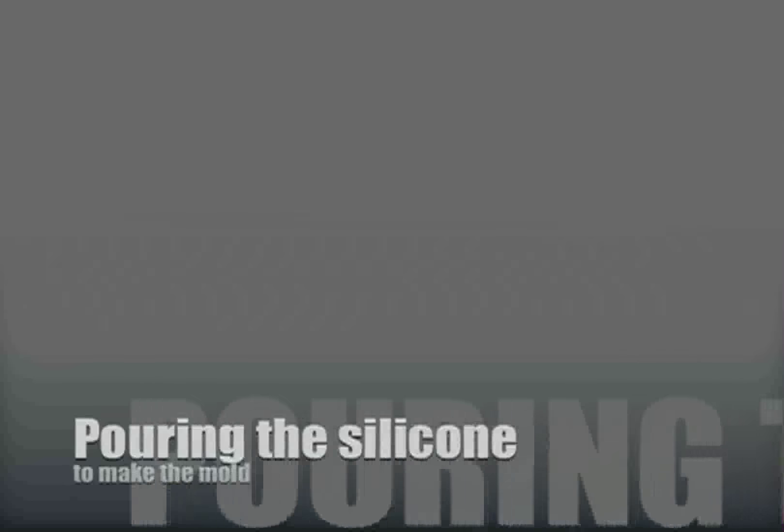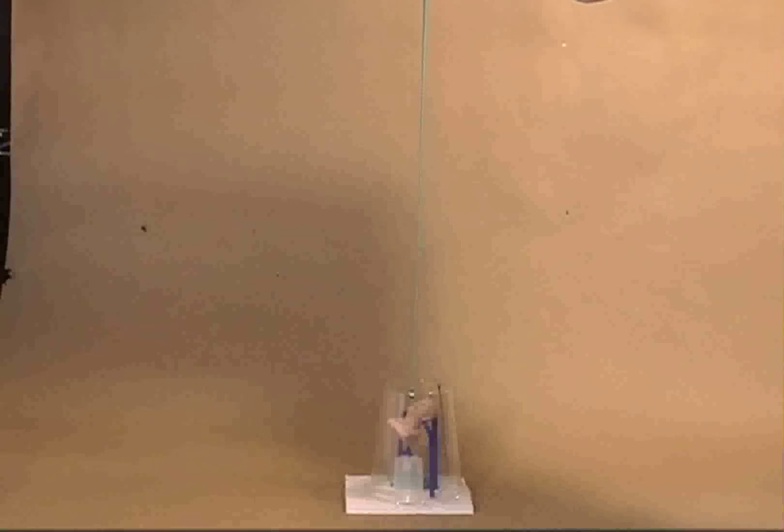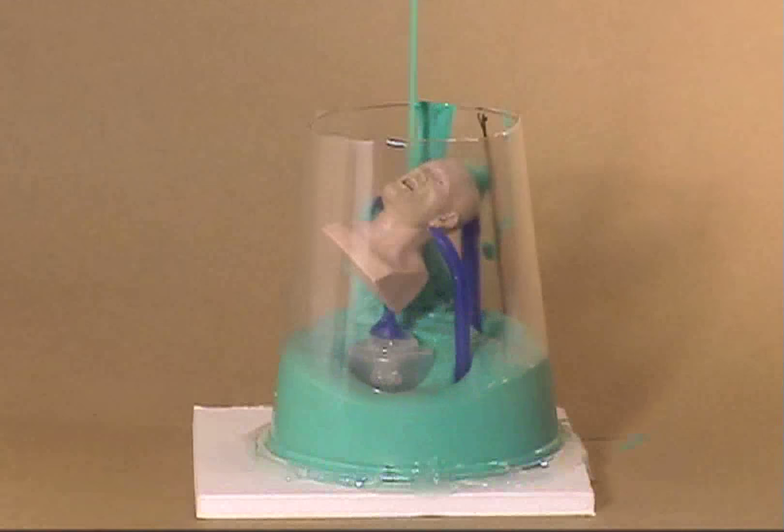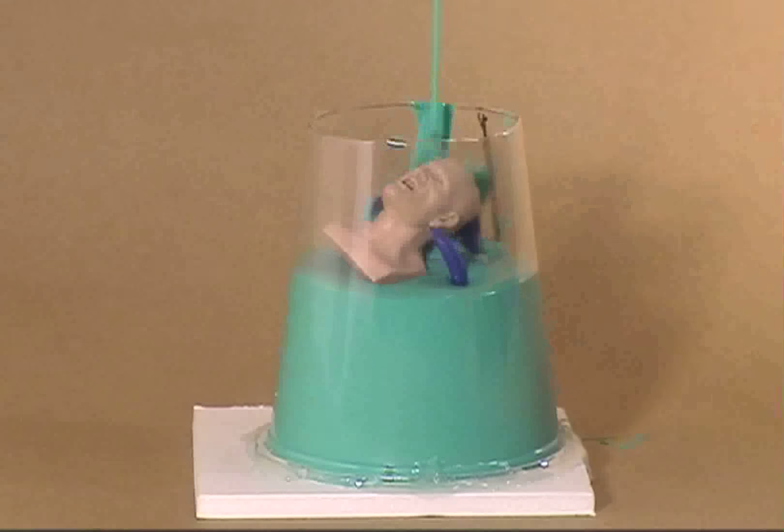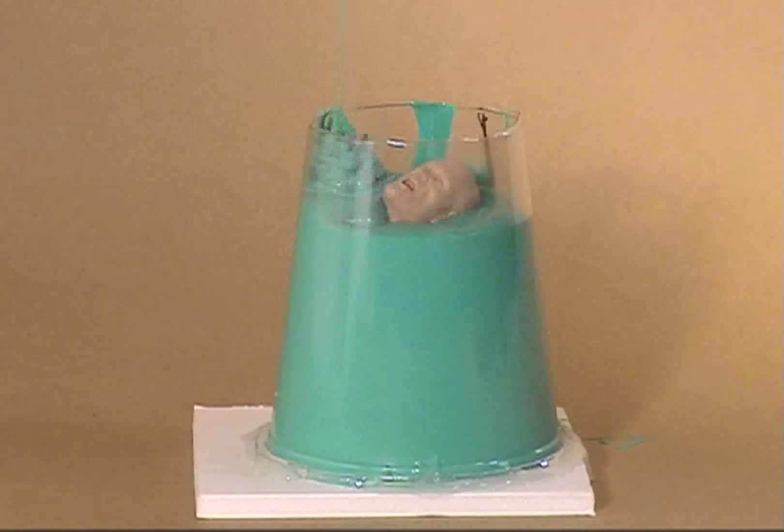Without the aid of an evacuator you'll need to do what's called a high pour. This is the second best way to remove bubbles out of the silicone so you can make sure that you get all those important details in your sculpture.